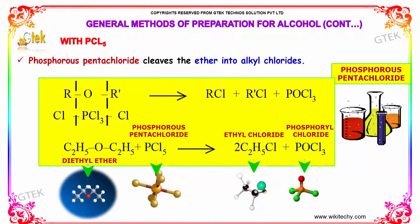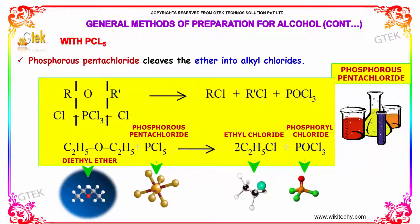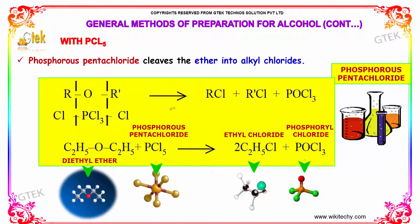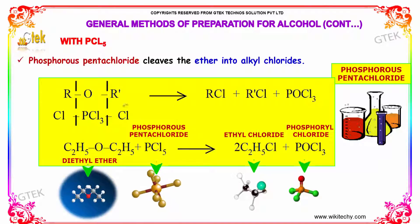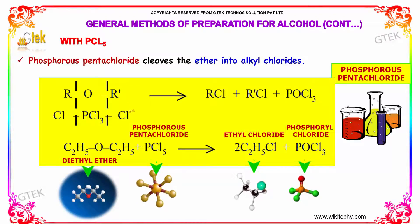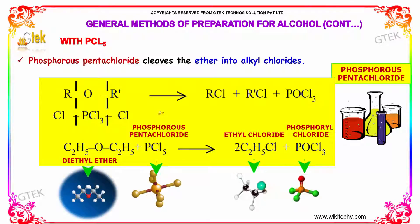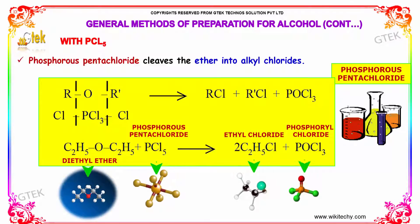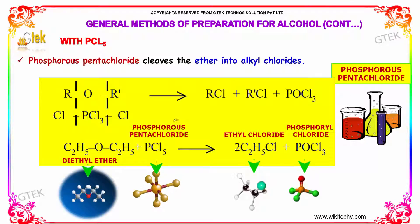Reaction with PCl5, also known as phosphorus pentachloride, cleaves the ether into alkyl chlorides. Here, diethyl ether on reaction with PCl5 forms ethyl chloride plus phosphoryl chloride. And this is a general representation of any ether reaction with PCl5.